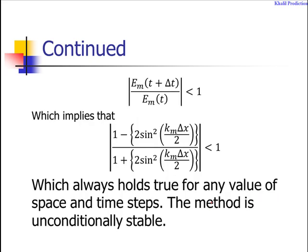If we analyze this, sin² θ is always between 0 and 1. The expression [1 minus 2a] divided by [1 plus 2a], where a is some quantity between 0 and 1, is always less than 1 because the numerator is smaller and the denominator is larger.